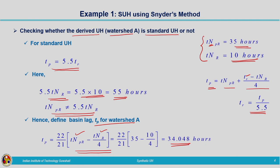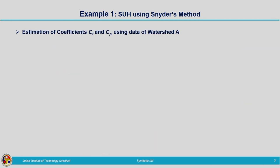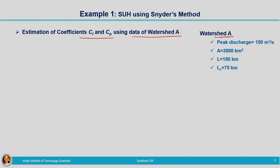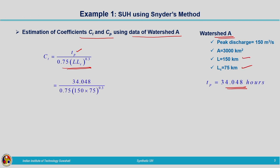Next, we estimate coefficients Ct and Cp using data from watershed A. The formula for Ct is: tP / (0.75 × (L × Lc)^0.3), where tP = 34.048 hours and L, Lc are for watershed A. Substituting these values gives Ct = 2.765.